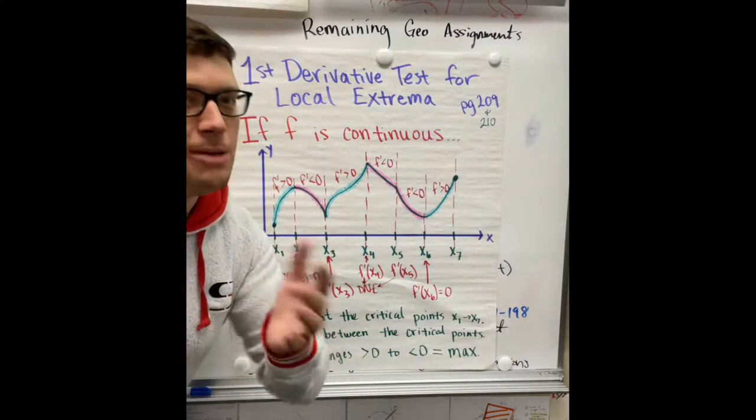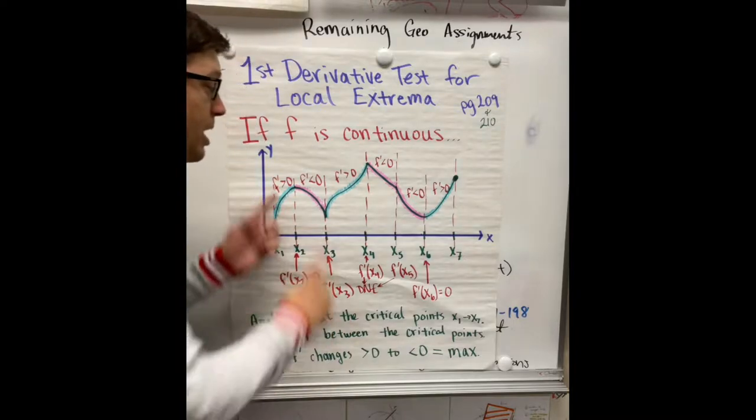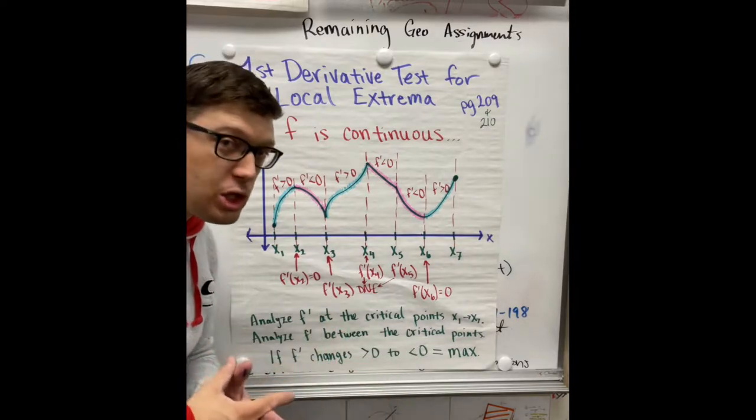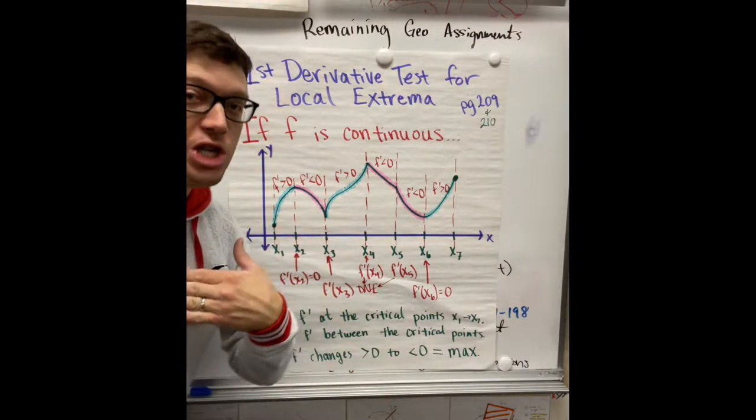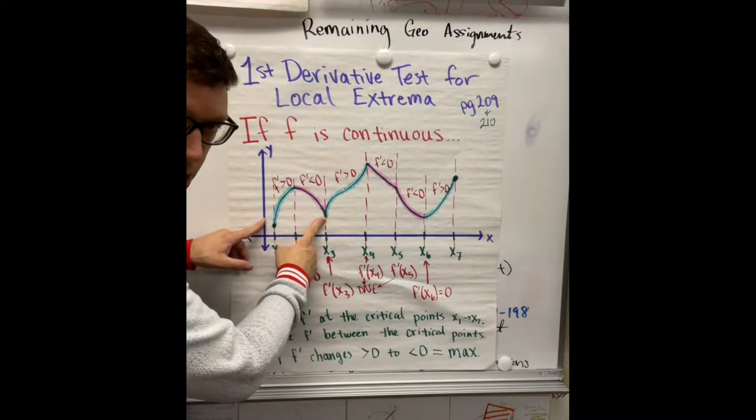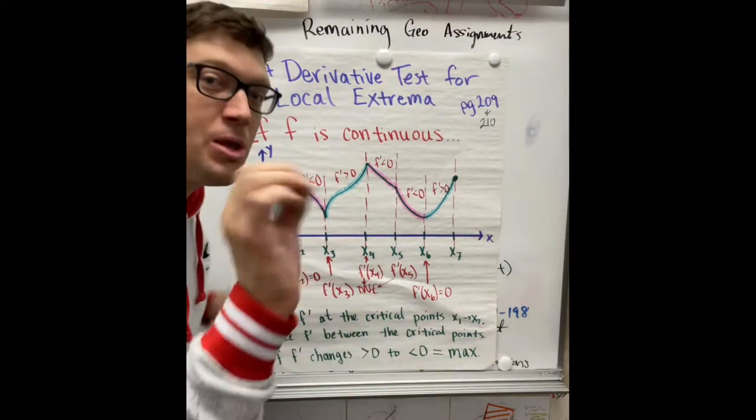Now, if the function's increasing, that means its first derivative is positive. If the function's decreasing, that means the first derivative is negative. What we have to do is look at those places where the function changes from a first derivative being positive to a first derivative being negative. And wherever that happens, that's a critical point.